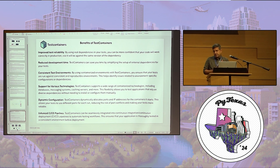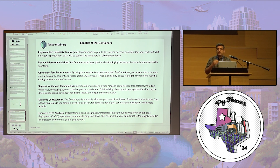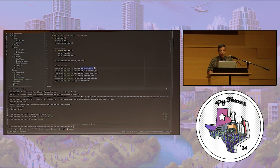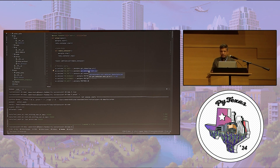Test cases written using Testcontainers can also be part of CI/CD pipelines. On local we can have a Docker daemon, but in CI/CD it can connect to Docker running on a remote host. The API provides functions like getConnectionUrl and getHost that ensure our test cases remain consistent across every environment — whether local or part of CI/CD.